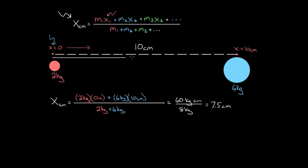So it's gonna be 7.5 centimeters from the point we called X equals zero, which is right here. That's the location of the center of mass. So in other words, if you connected these two spheres by a rod, a light rod, and you put a pivot right here, they would balance at that point right there.